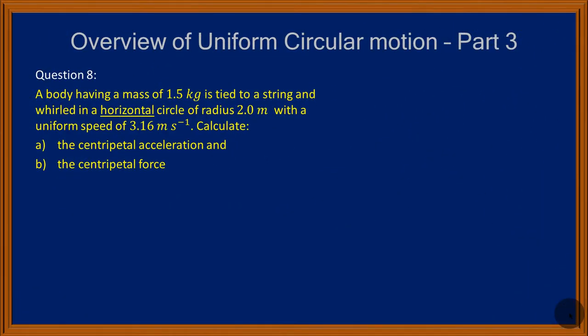Let's go straight to this video where I'm going to look at the calculations and how we go about calculations in uniform circular motion. Here is the third part of the overview of uniform circular motion. Let's go straight to the question: a body having a mass of 1.5 kilograms is tied to a string and whirled in a horizontal circle of radius 2 meters with a uniform speed of 3.16 meters per second.